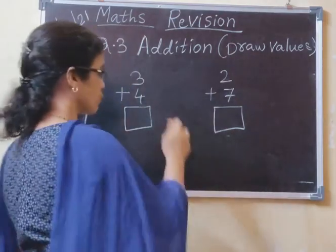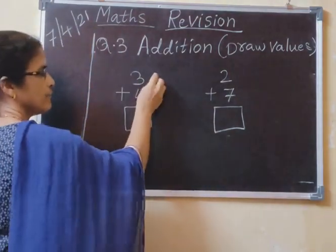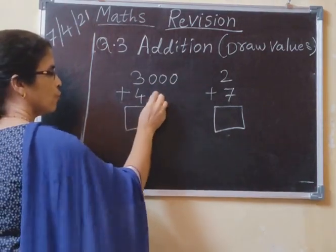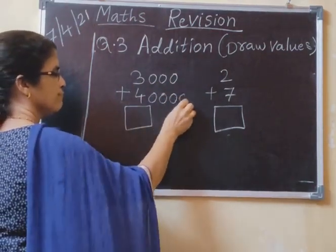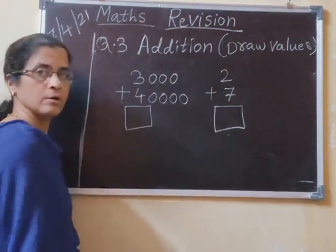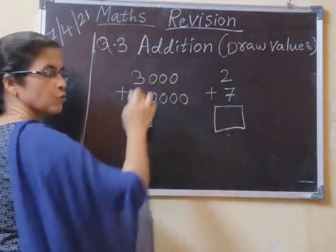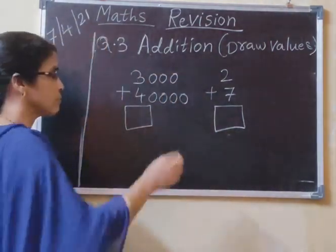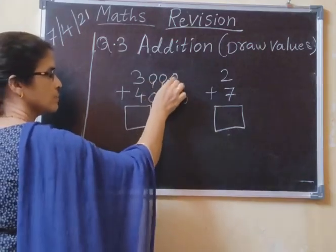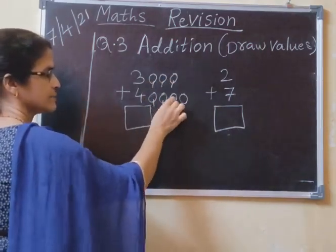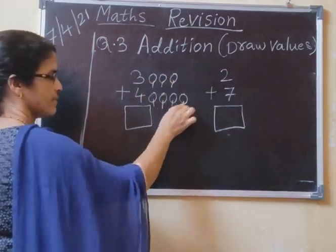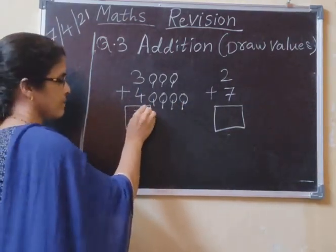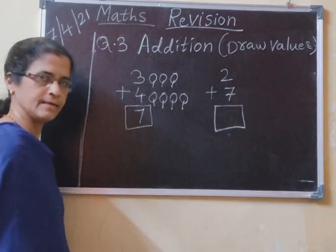Addition. Now three — we have to draw three objects: one, two, three. Then four: one, two, three, four. Five, six, seven. Then we have to draw four. Count: one, two, three, four, five, six, seven. So what is our total? Three plus four equals seven.